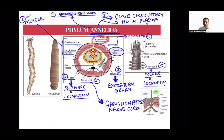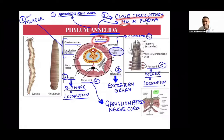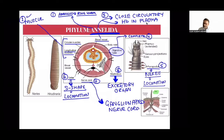Annelida have blood vessels — a closed blood vascular system. Their blood is red because they have hemoglobin, but unlike in humans, the hemoglobin is directly present in the plasma, not within RBCs. So RBCs are not present here. Digestive system is complete — mouth at the anterior end and anus at the posterior end.